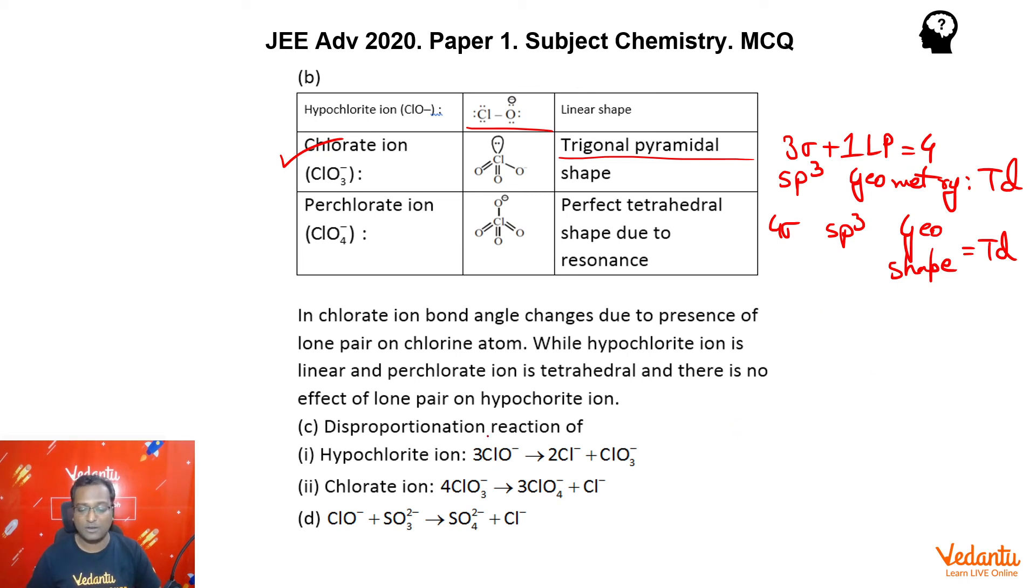So, when ClO- that is chlorine in plus 1 disproportionate, it goes to higher as well as lower oxidation state, correct? Similarly, chlorate when it is in plus 5 will disproportionate, it will go to higher, that's plus 7 and lower, that's plus 1. So, do we get same products? No, we don't get same products here.